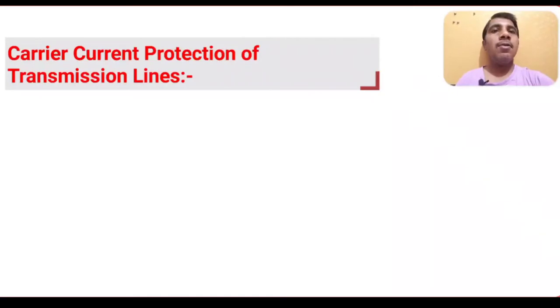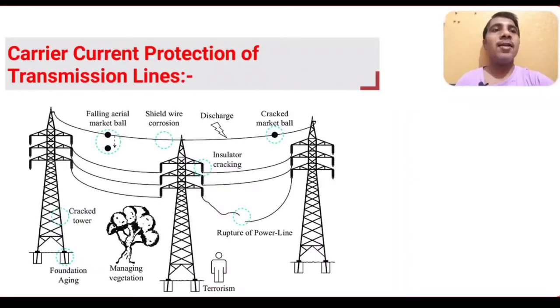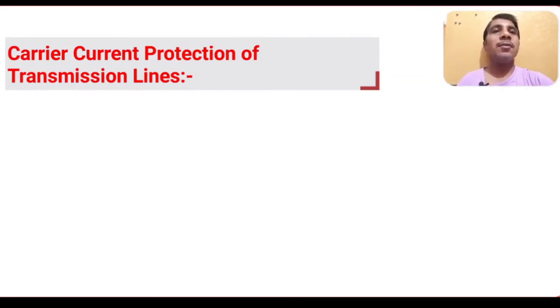Carrier current protection scheme is especially used for long transmission lines. Long transmission lines in the sense more than 100 kilometers — those may be considered as long transmission lines. Long transmission line protection uses carrier current protection.